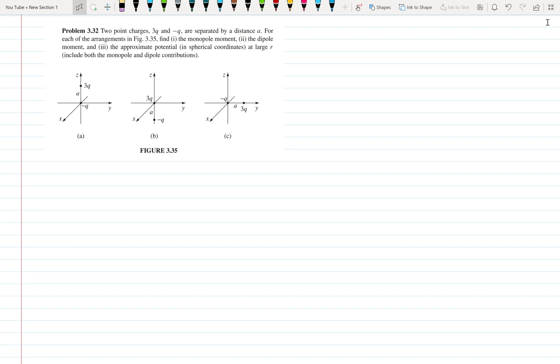First of all, let us take part number A, which says that the 3Q charge is in the Z axis and it is at the center. Monopole term for part A: as you very well know, it is the sum of the charges so we get only 2Q here.